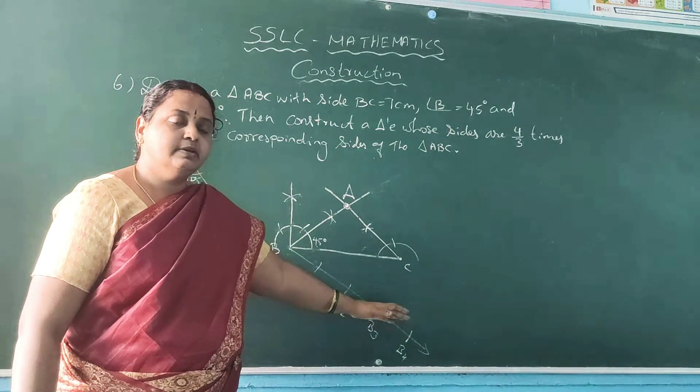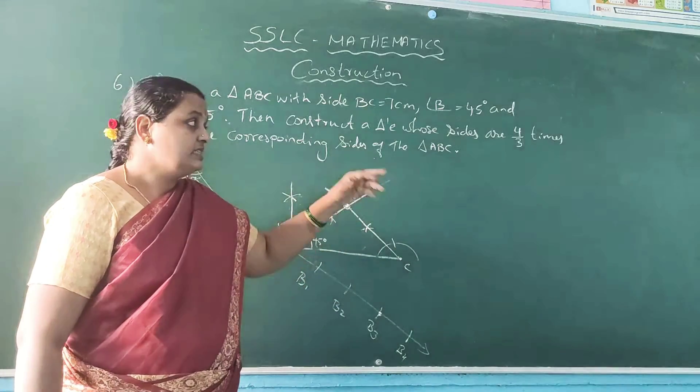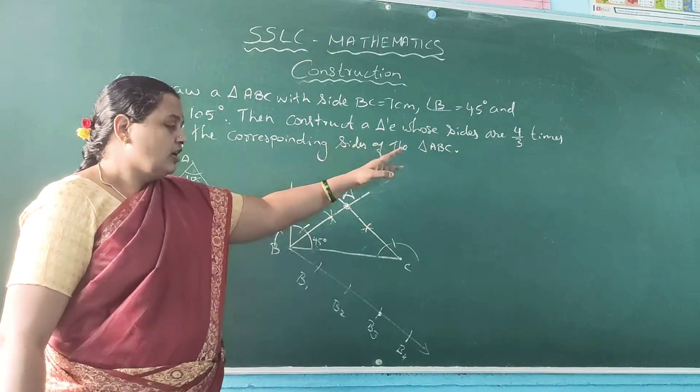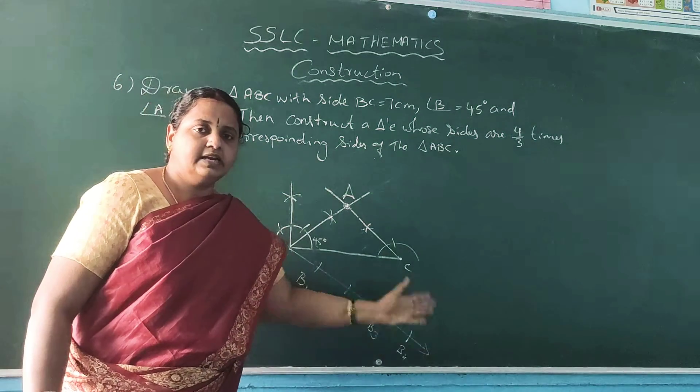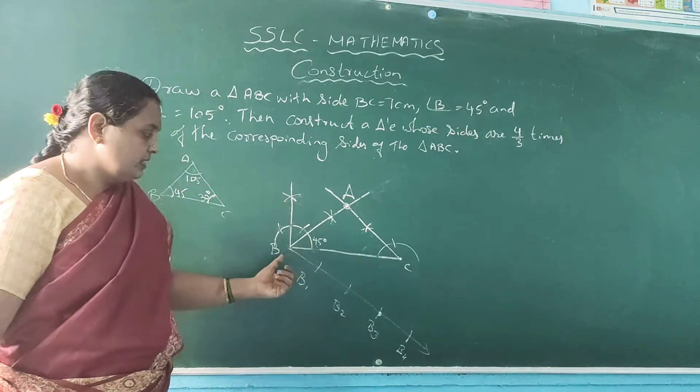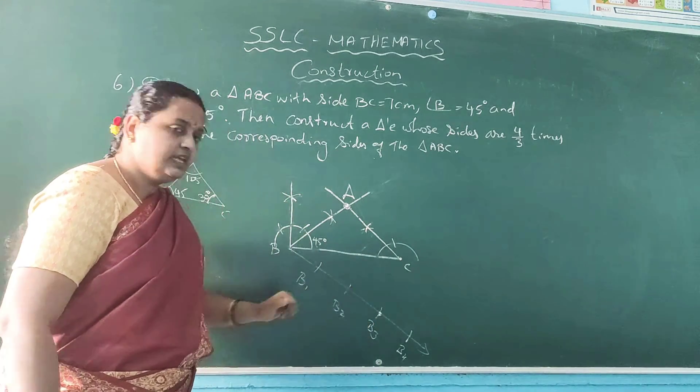But this is another method without adding the ratio. So just which is the bigger number? Then many times you should divide the line. Then see the denominator. Denominator is 3, so B3 you should mark.